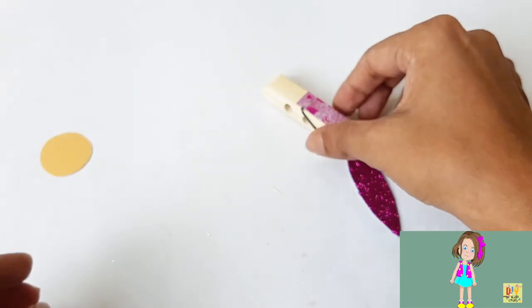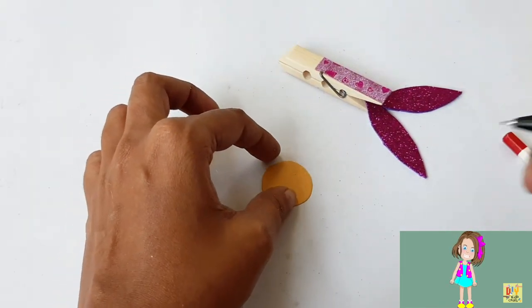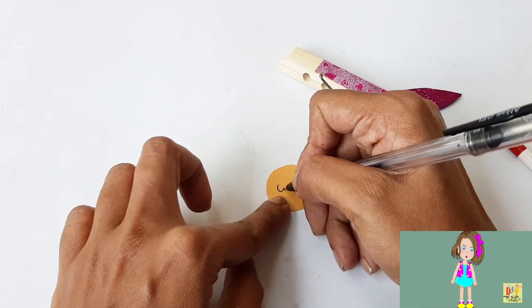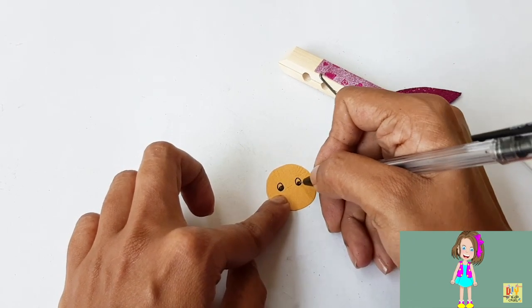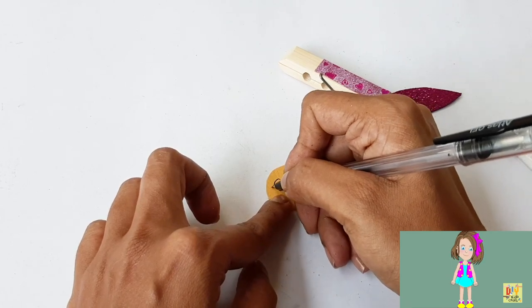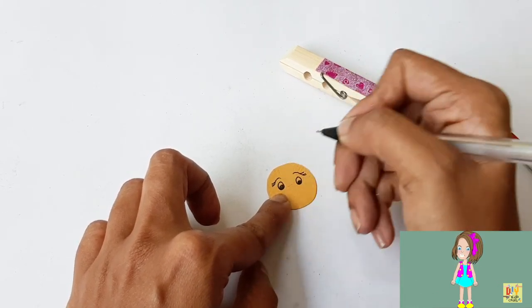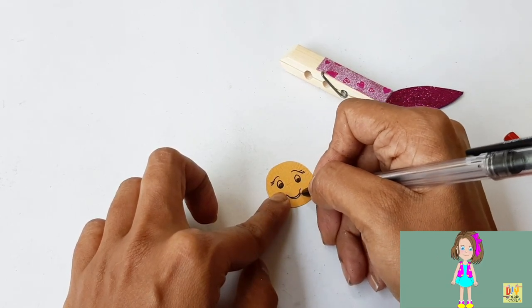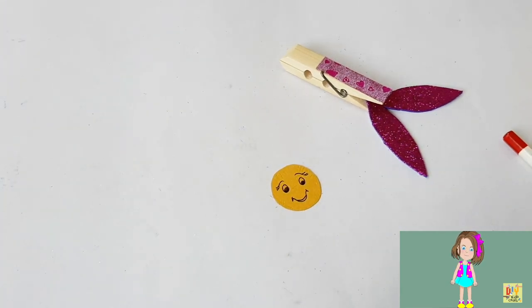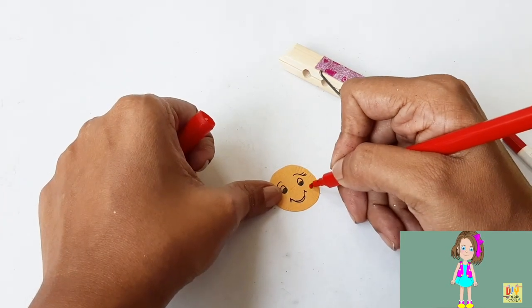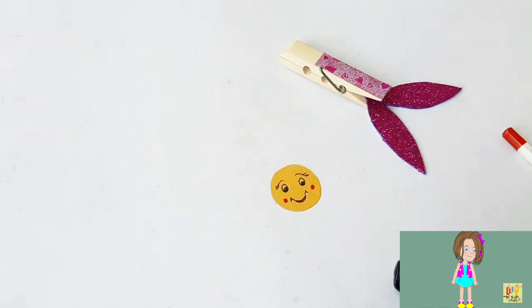Set aside. I have here a perfect circle shape, so you can use a coin if you want to have this perfect circle shape. Using a pen, draw a happy face like that. Always put a smiley face.